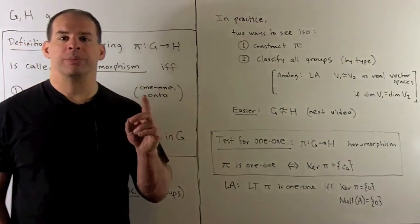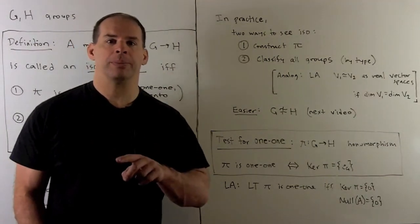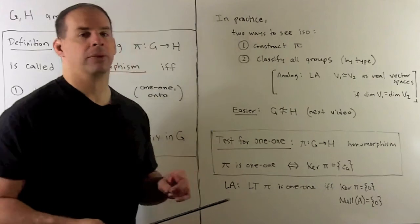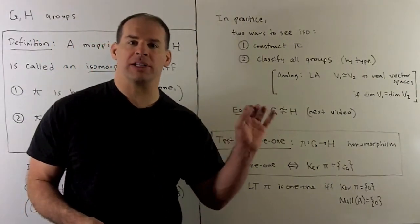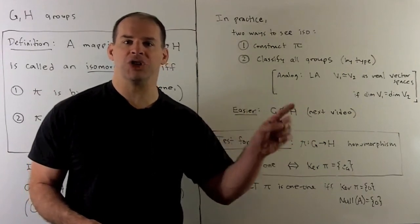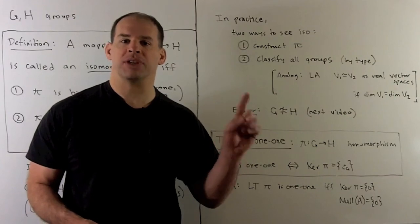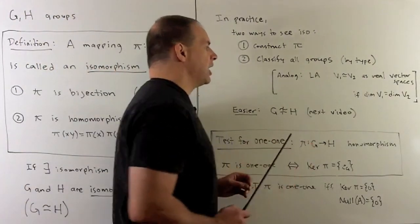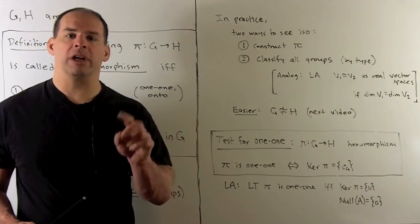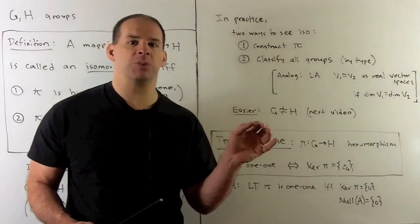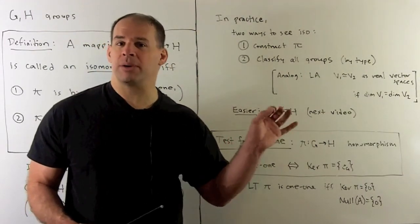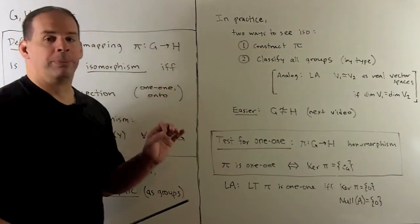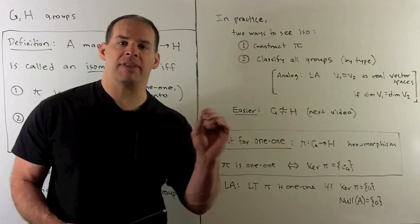In practice, if I want to show that two groups are isomorphic, by definition we need to actually construct this pi, this isomorphism. In some cases we can skip constructing pi if we have a classification for groups with certain qualities. As an analogy from linear algebra: two real finite-dimensional vector spaces are isomorphic if they have the same dimension — we skip constructing an isomorphism just by checking dimensions. Something a little bit easier is to see that two groups are not isomorphic, which I'll save for the next video.